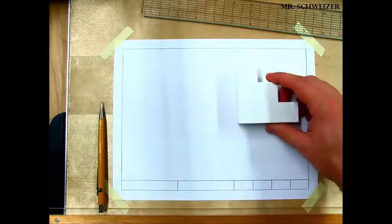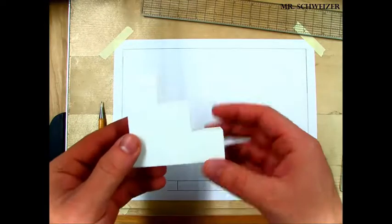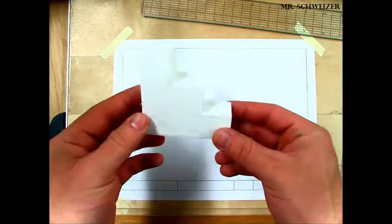Once our title block is complete, we're ready to start drawing our object. The first thing we need to do is determine the front side.